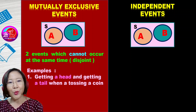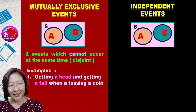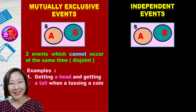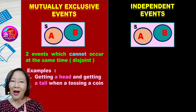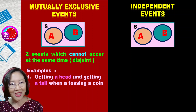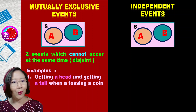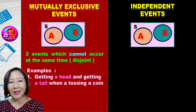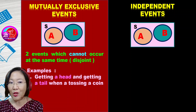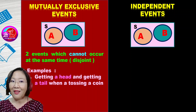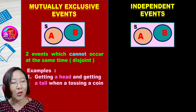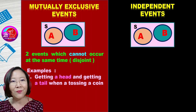For example, we have getting a head and getting a tail when tossing a coin. So you imagine yourself tossing a coin — you can only get either a head or a tail. You will never be in the situation where you get a tail and a head at the same time. So these are mutually exclusive events.